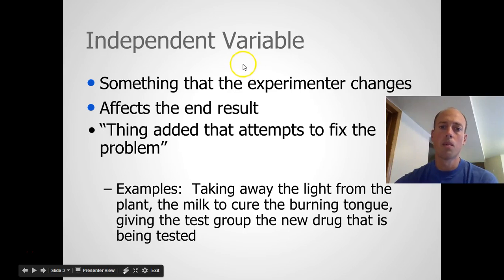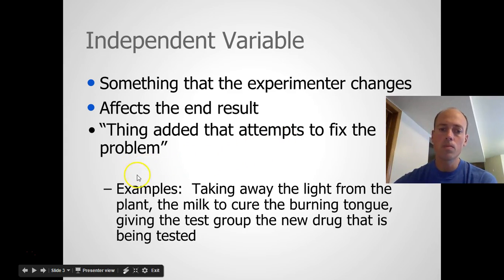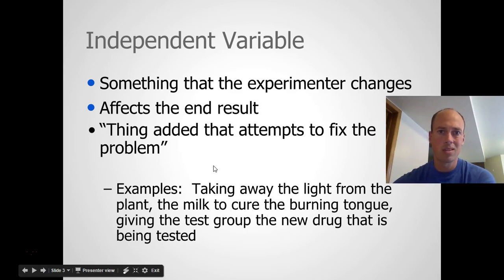The independent variable is something that the experimenter changes. It will affect, or strive to affect, the end result. This is the thing that you're trying to figure out if it works — the thing added that attempts to fix the problem. For example, taking away the light from a plant, if your hypothesis was that plants don't need light to grow, the independent variable would be the thing the experimenter is changing to try to answer the question that was posed.